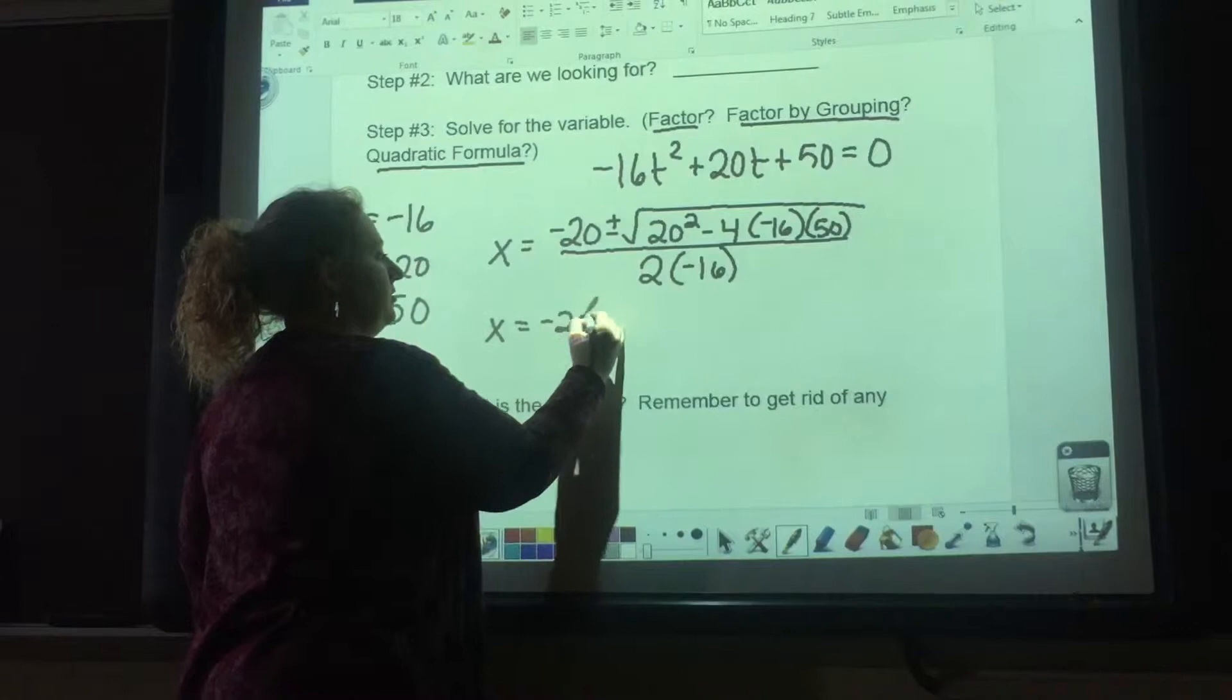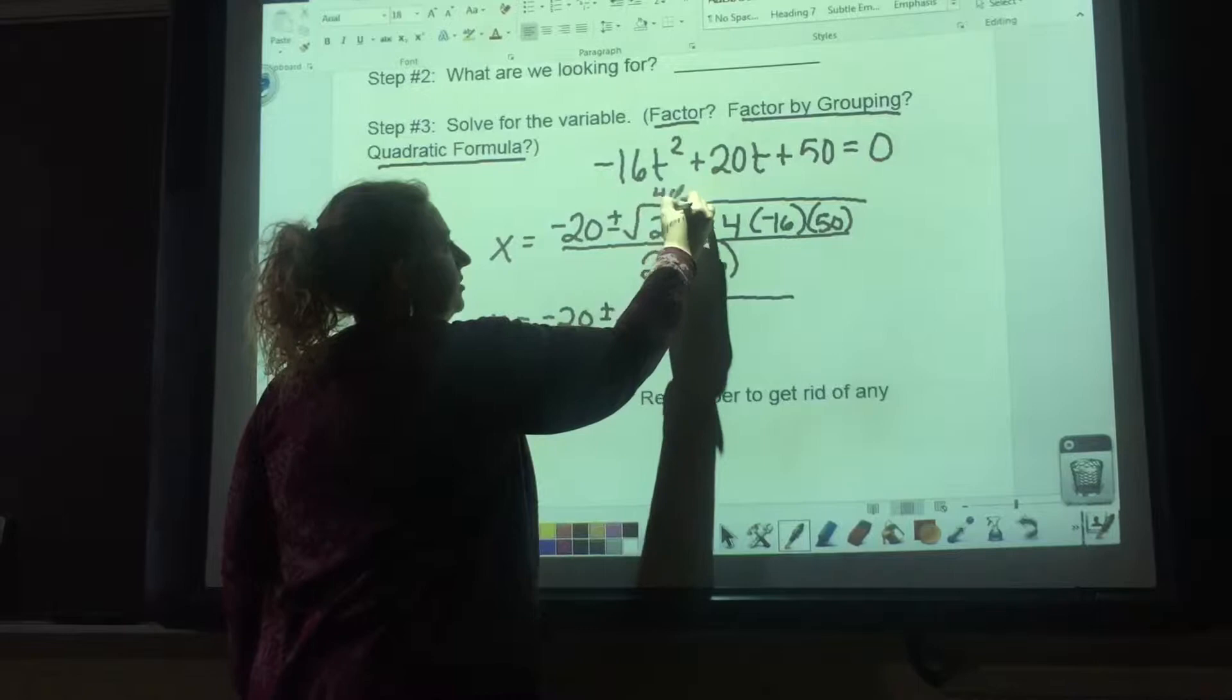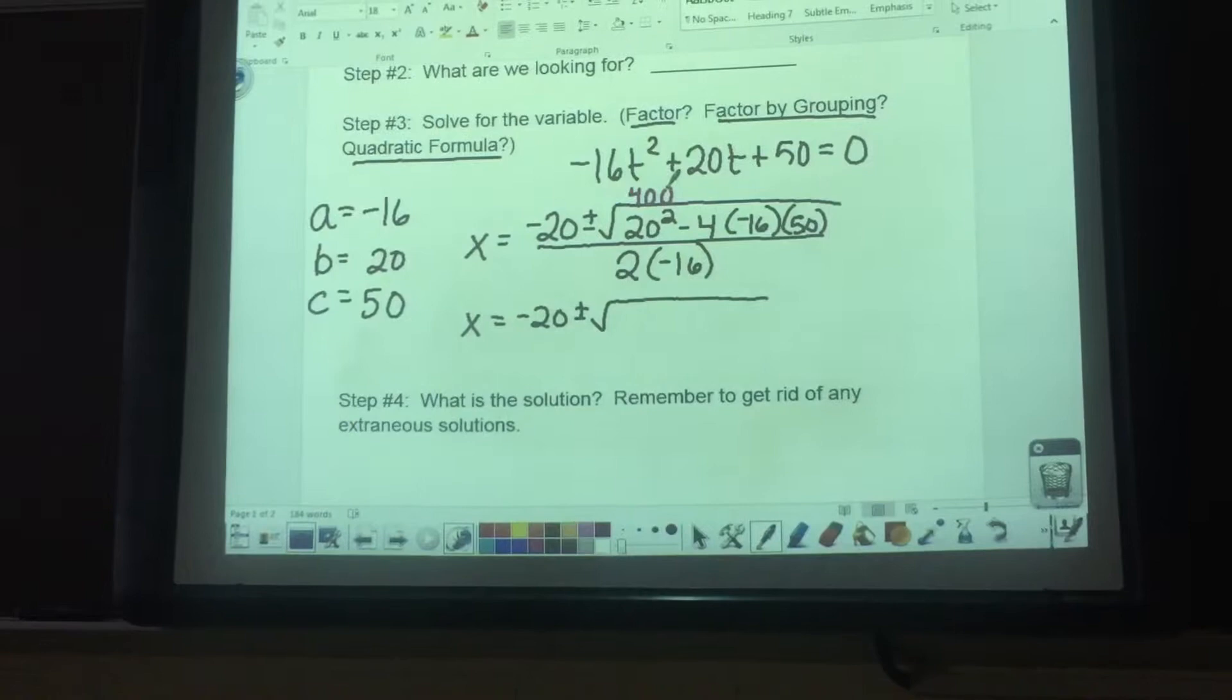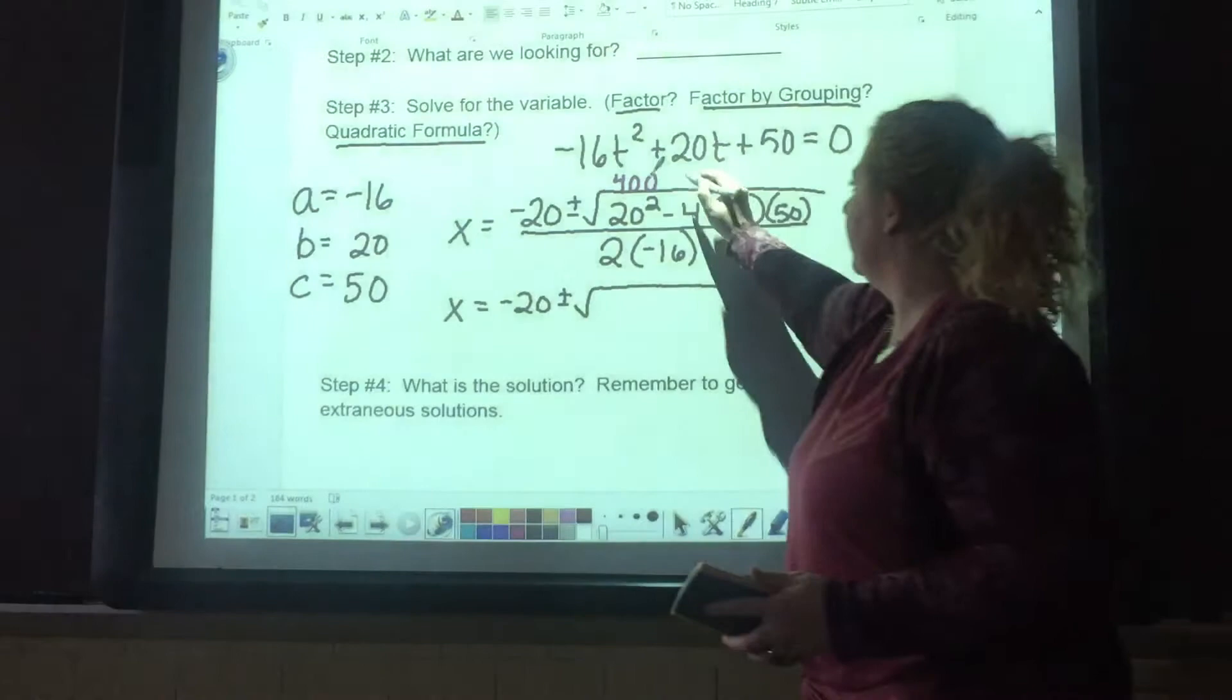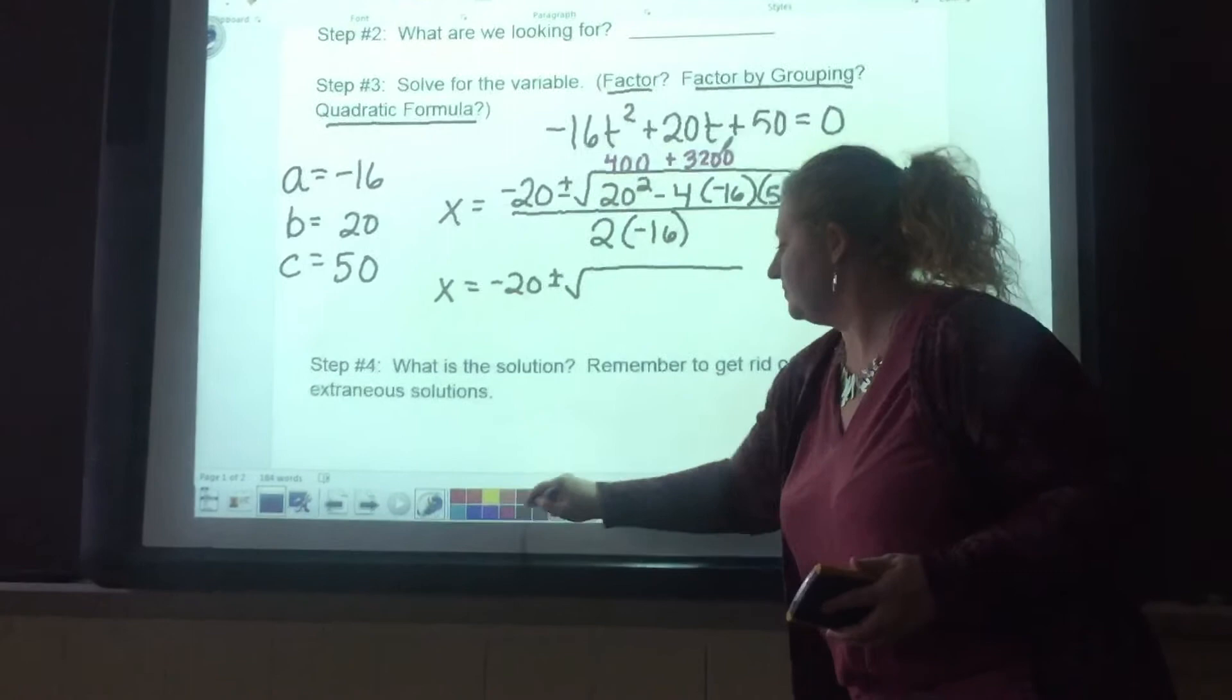Negative 20 plus or minus. For our discriminant, this is going to equal 400. I'll just be honest with you, I haven't worked this out. So I'm going to get my handy dandy calculator. I have negative 4 times negative 16 times 50, and that gives me positive 3,200. So my discriminant is 3,600, over negative 32.